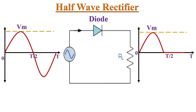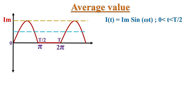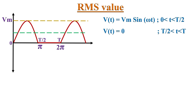Now let's discuss average current. Whenever the diode is conducting, some finite amount of current will flow through the circuit. If Vm is the peak amplitude of the sinusoidal wave, then the peak amplitude of current Im can be given by Vm / RL. The output waveform of current looks very similar to the voltage waveform, and the average value of current will be Im/π, which equals Vm / (π × RL).